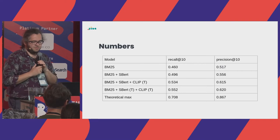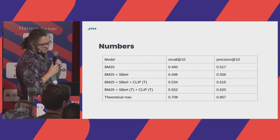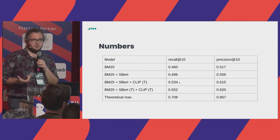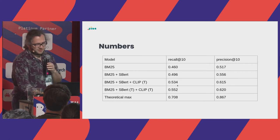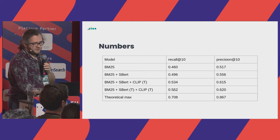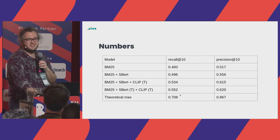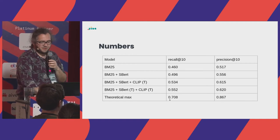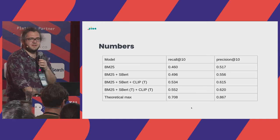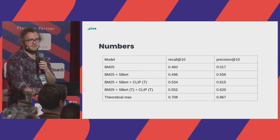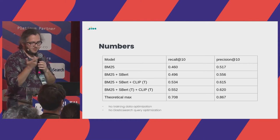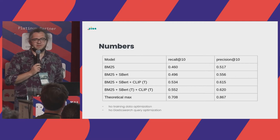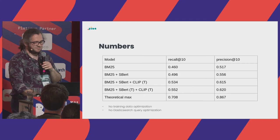With this combination: BM25 plus SBERT gives a small recall improvement; adding CLIP gives much greater improvement — even though CLIP alone was worse, the image signal brought substantial gains. Fine-tuning SBERT gives another incremental improvement. To be fair, there was still a gap to the theoretical maximum: the theoretical max for recall@10 was 0.7, and we acknowledge there's a lot of room for improvement since we did no training data optimization and no Elasticsearch query optimization.